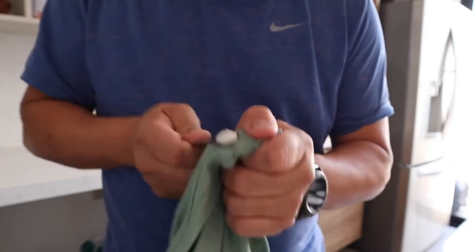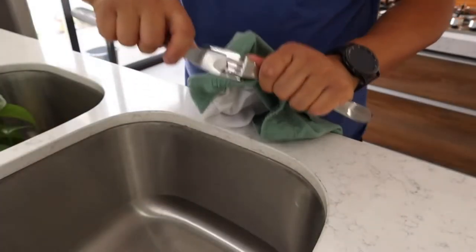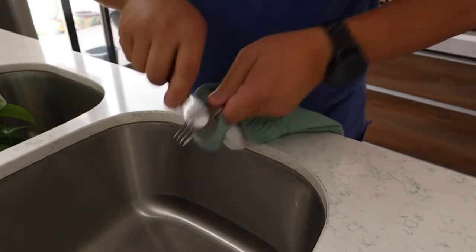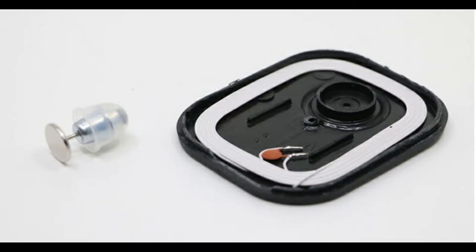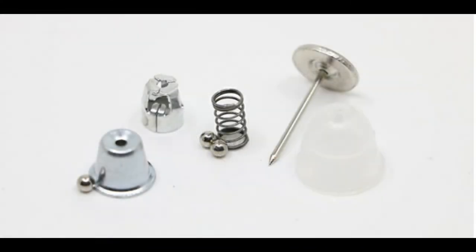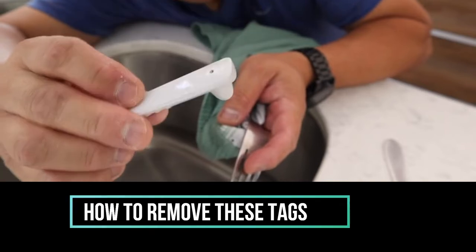But today we are going to discuss what makes this tiny tag so strong that it cannot be removed easily. This looks like a small piece of polycarbonate, but this tiny tag has marvelous engineering inside. Let's find it out, and also how we can remove these tags if we have got one by mistake.